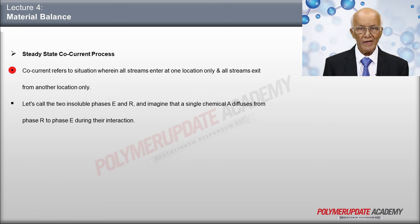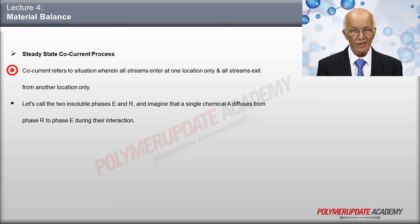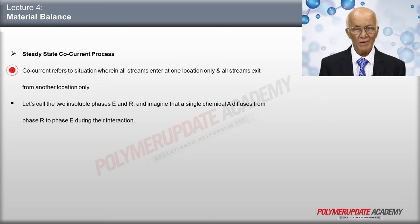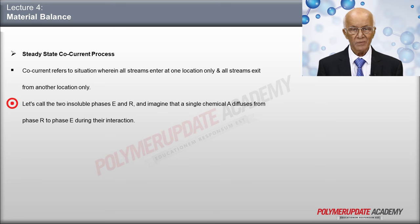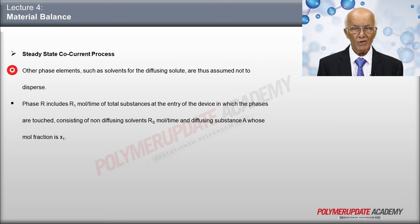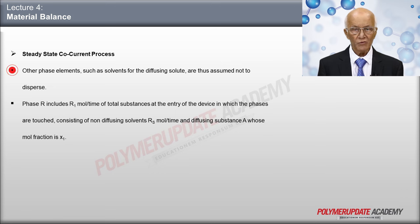Co-current refers to a situation wherein all streams enter at one location only and all streams exit from another location only. Let the two insoluble phases be identified as phase E and R, where a single substance A diffuses from phase R to phase E during their contact. The other constituents of the phases, namely solvents for the diffusing solute, are considered not to diffuse.